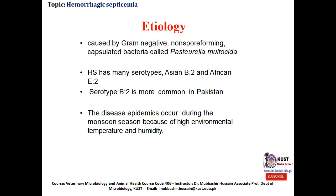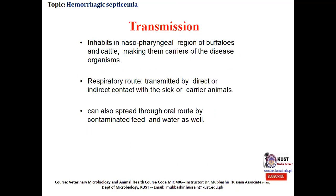The monsoon season is important from the perspective of high environmental temperature and humidity. Regarding transmission, Pasteurella multocida is an inhabitant of the nasopharyngeal region of buffaloes and cattle, making them carriers of the disease organism. The disease is primarily transmitted through the respiratory route by direct or indirect contact with sick or carrier animals, but it can also be transmitted through the oral route by consumption of contaminated feed and water.